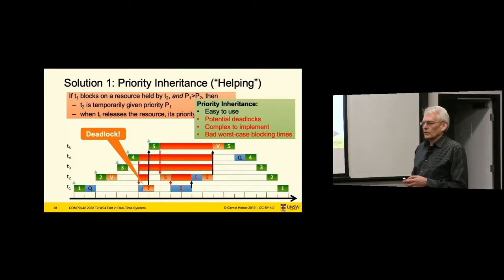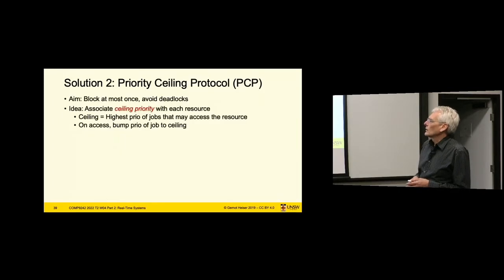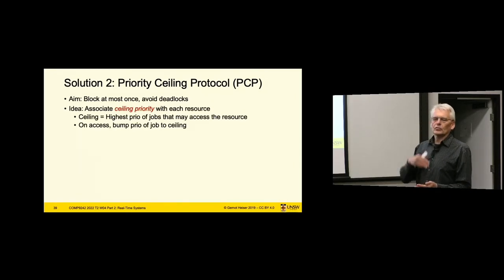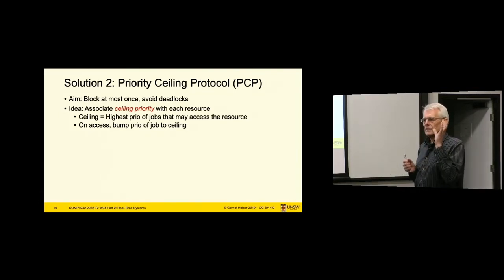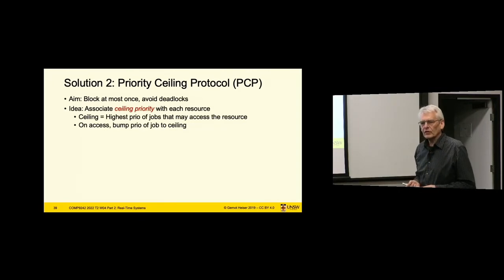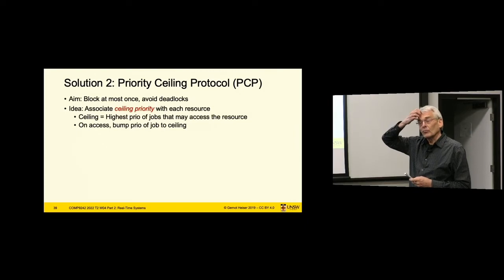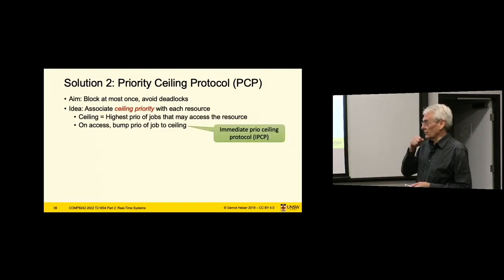The alternative is what's called priority ceiling. The idea is that we don't wait for someone else to try to access the critical resource in order to bump the priority. Instead, we associate a priority with the resource itself, and as soon as it's acquired, the holder runs at that higher priority. We have a concept of a ceiling priority — the highest priority of all tasks that are potentially going to access this critical resource, plus one — and as soon as we enter the resource we bump up to that ceiling priority.